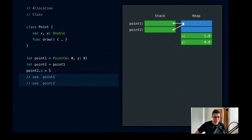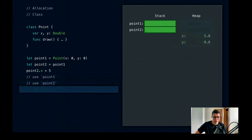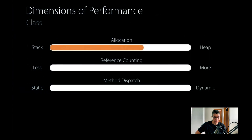Then we use point1 and point2, and Swift deallocates the heap memory on our behalf — locking the heap, returning the unused block, then popping the stack. The conclusion: classes are more expensive to construct than structs because they require a heap allocation. Classes have powerful characteristics like identity and indirect storage, but if we don't need those characteristics, we'll get better performance using a struct.